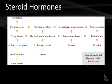Starting from pregnenolone, a series of conversions form aldosterone, the prototypical mineralocorticoid. A different set of reactions forms cortisol, the prototypic glucocorticoid. A different reaction produces the sex steroids, the prototypic forms of which are testosterone and estradiol.